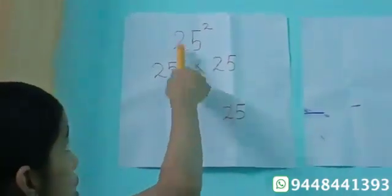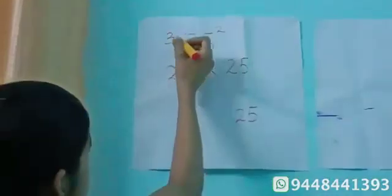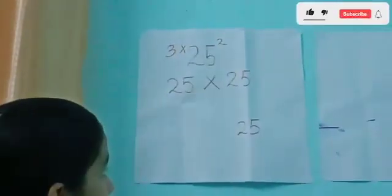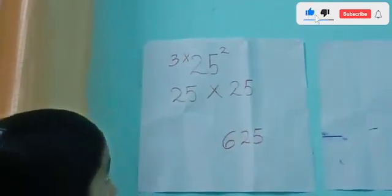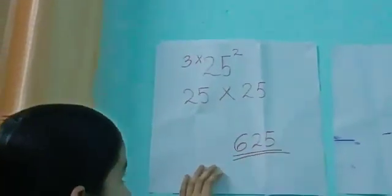So 2, the number after 2 is 3. So we want to multiply 3 into 2. That is 6. So the final answer of 25 square is 625. This is the answer of 25 square.